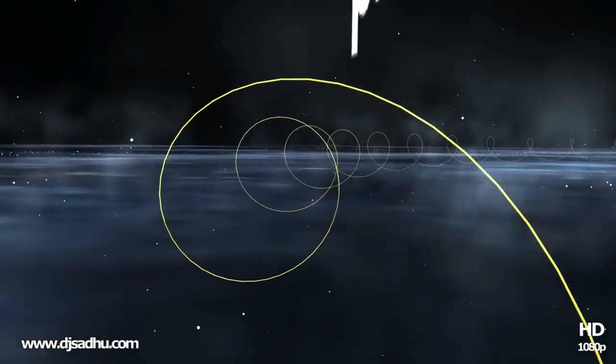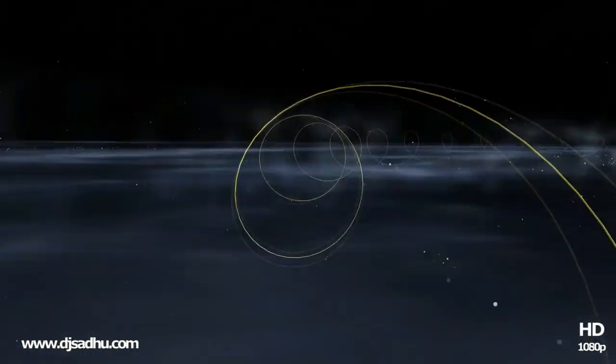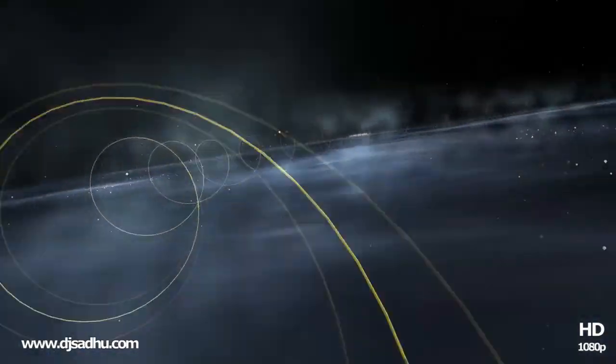Since the birth of the sun, which means since 4.6 billion years ago, it has completed 18 cycles around the center of the galaxy.